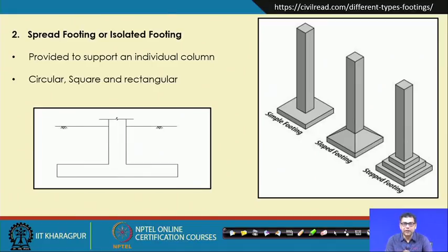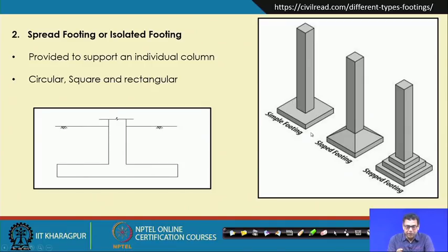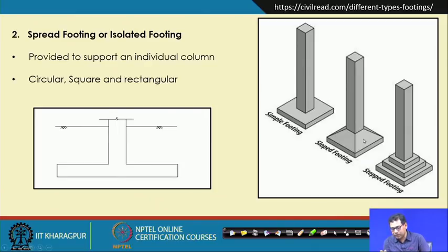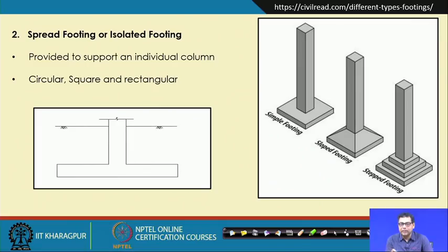The next type is the spread footing or isolated footing. This can be circular, square, or rectangular. Each footing is provided under a particular column with no overlap and a clear spacing between two footings. It is provided to support an individual column and can be circular, square, or rectangular.